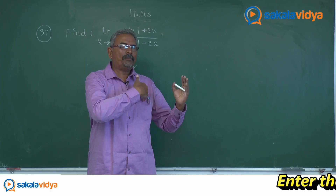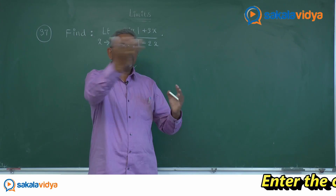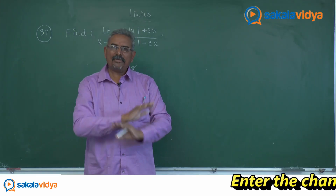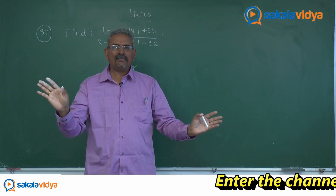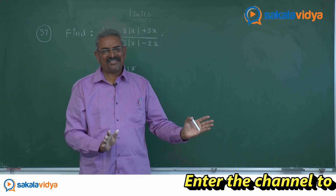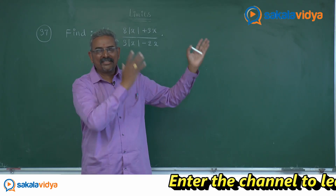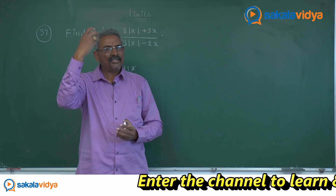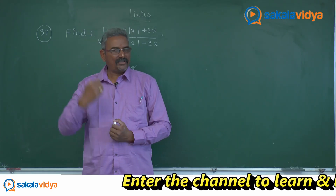In the numerator you get 11x, in the denominator x, so x cancels. If you apply any limit to a constant, it never changes — it remains as it is. So 11 is the right answer. The process has to be written in sequential order.